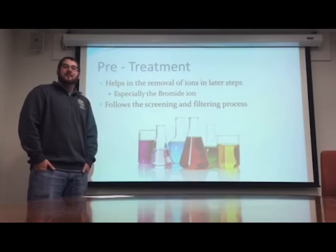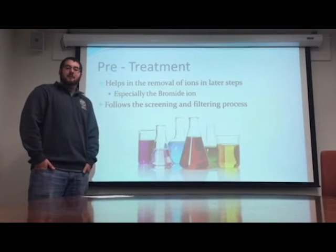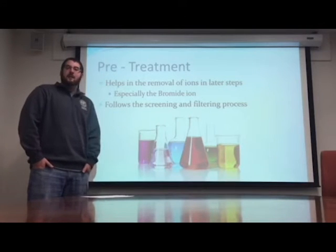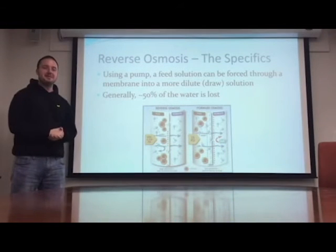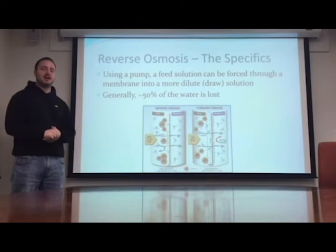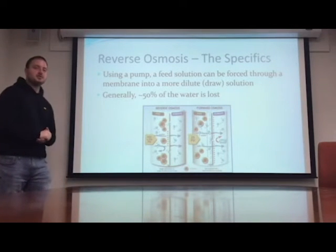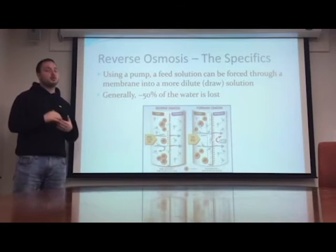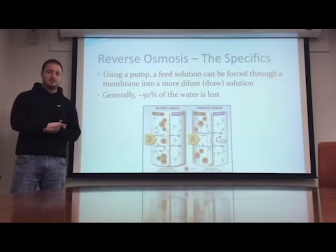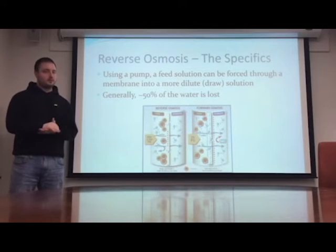Before entering the reverse osmosis process, some pretreatment chemicals must first be added to the solution, such as acids and dechlorination additives. These chemicals today are often environmentally friendly and help in the removal of ions such as bromide. Reverse osmosis occurs when one supplies a pressure greater than osmotic pressure to the draw solution side, forcing a solution with higher concentration through a membrane into a solution with lower concentration.